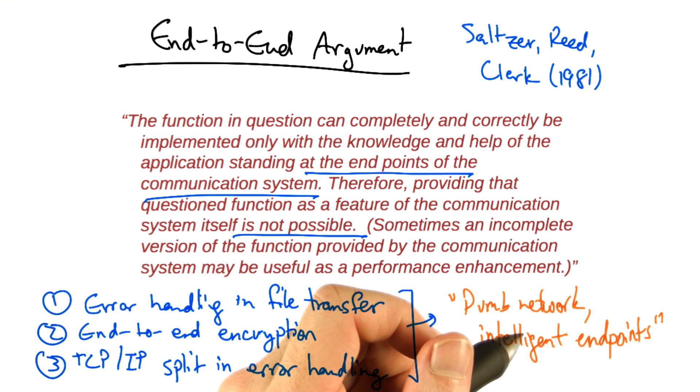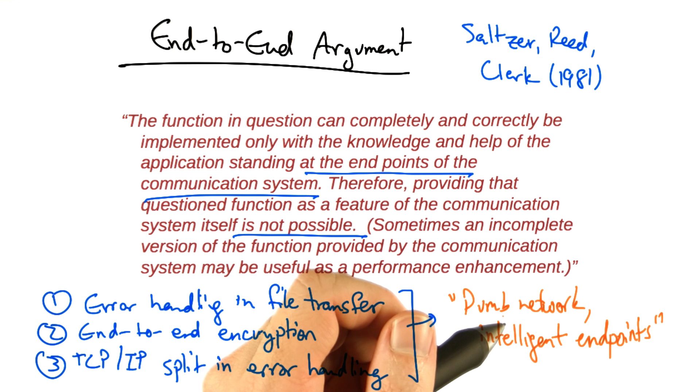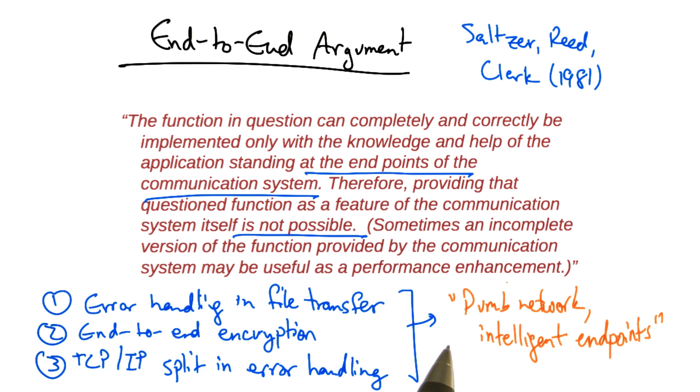Many people argue that the end-to-end argument allowed the internet to grow rapidly because innovation took place at the edge in applications and services, rather than in the middle of the network, which can be hard to change sometimes.